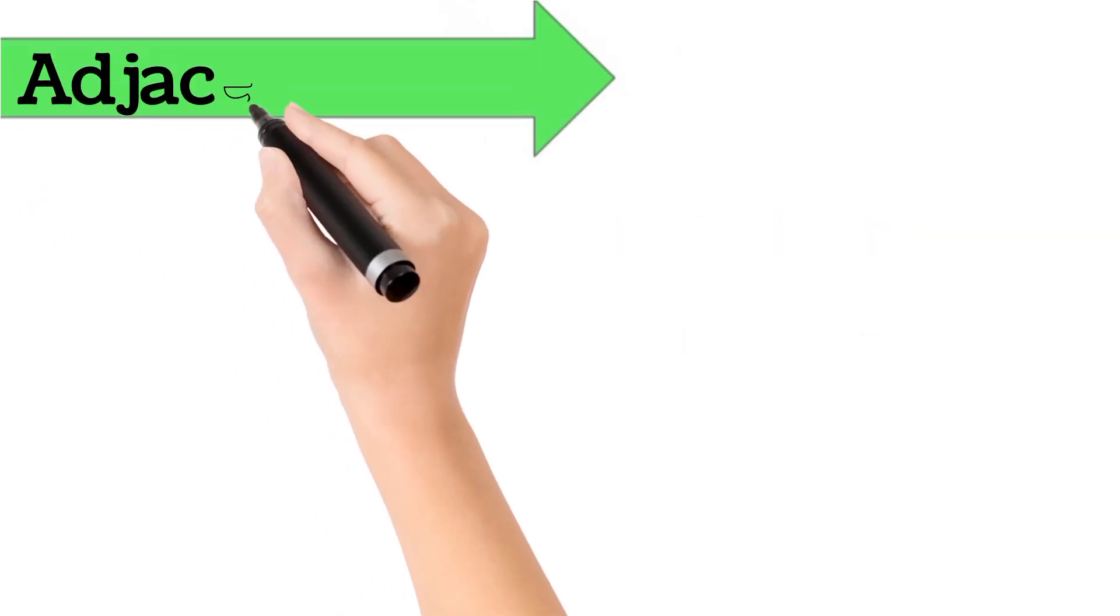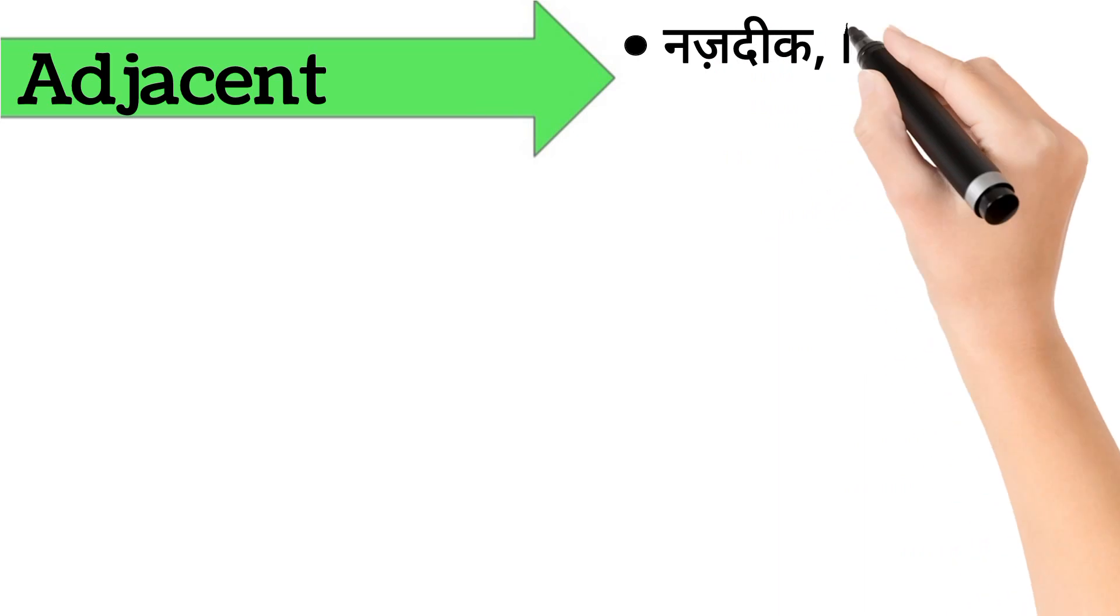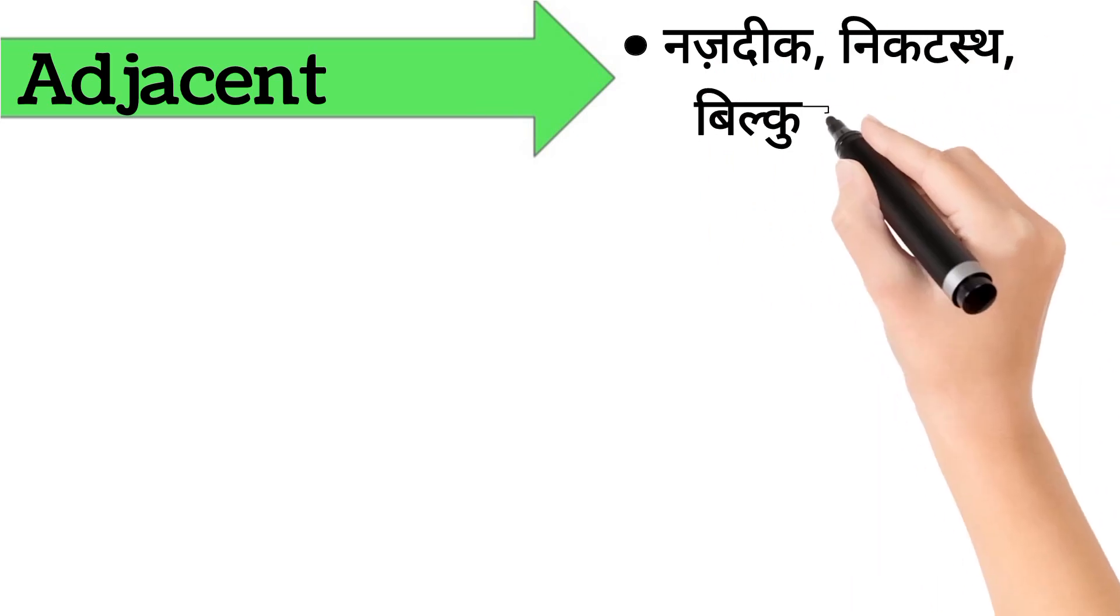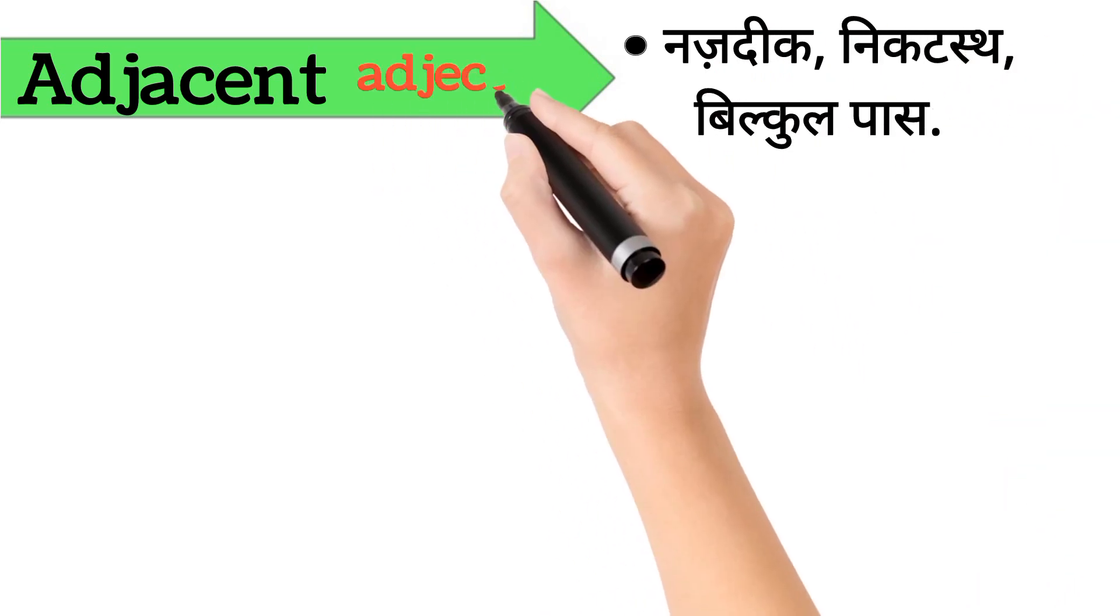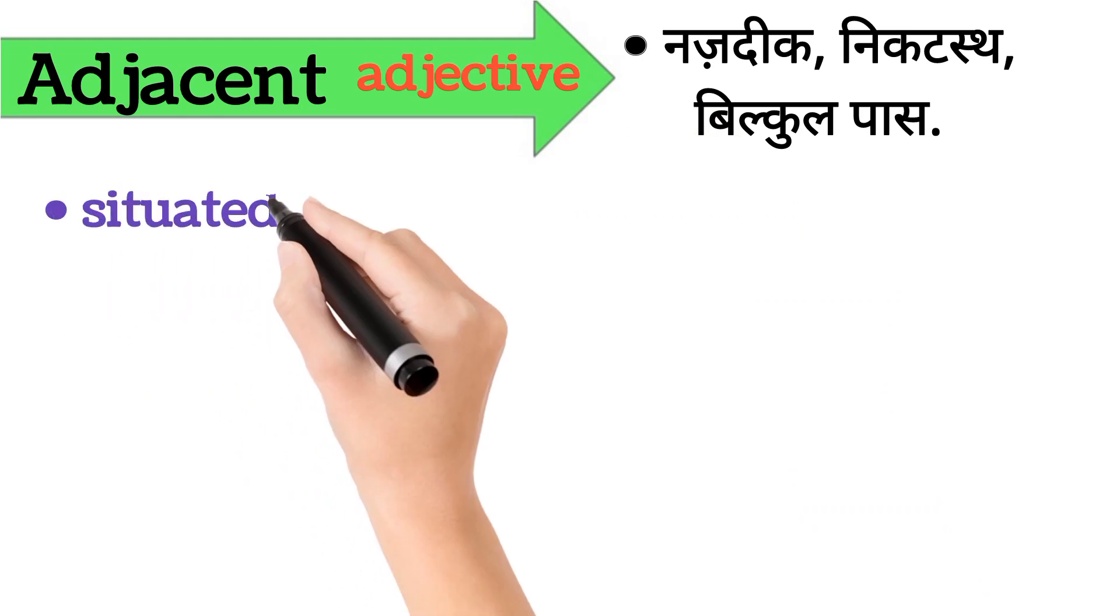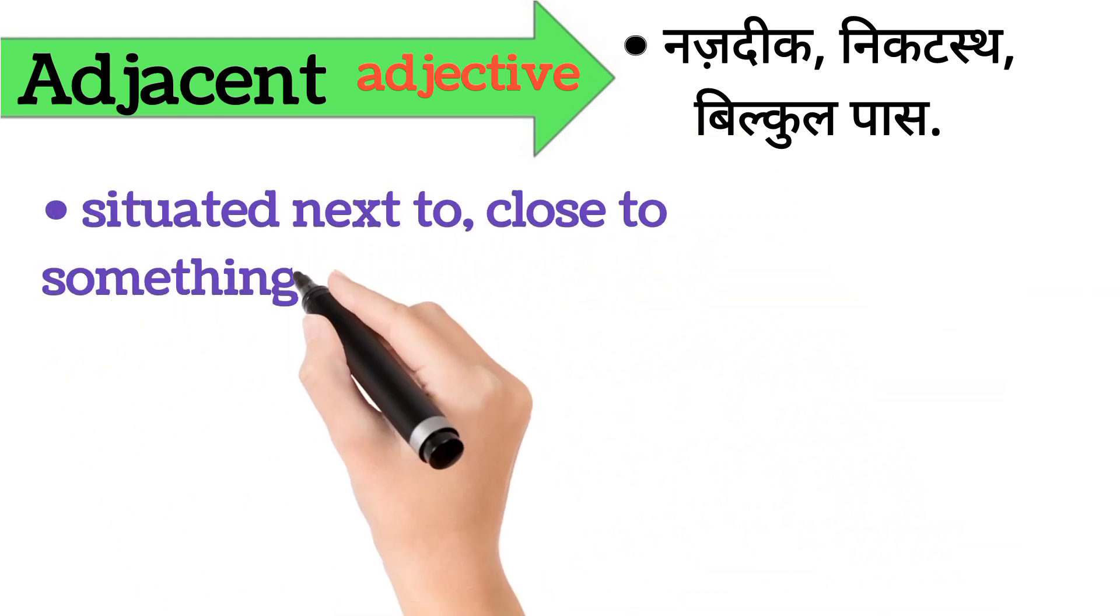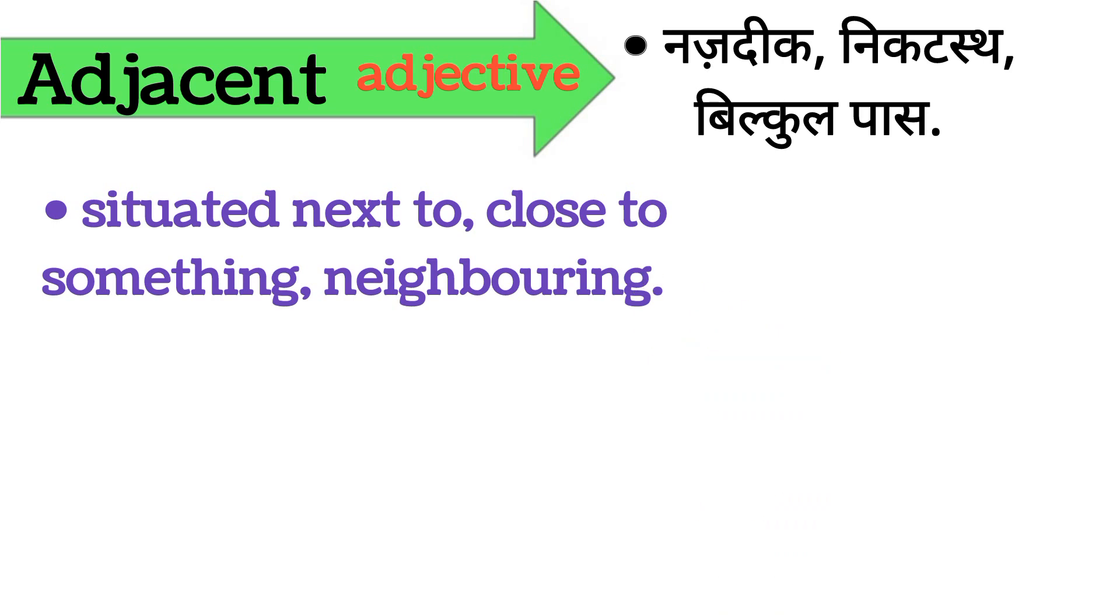Adjacent. Adjacent ka arth hai nasdeek, nicotest, bilkul paas. Adjacent word adjective form mein aata hai. It's also called situated next to, close to something, neighboring. Iska example hai, my room is adjacent to her.